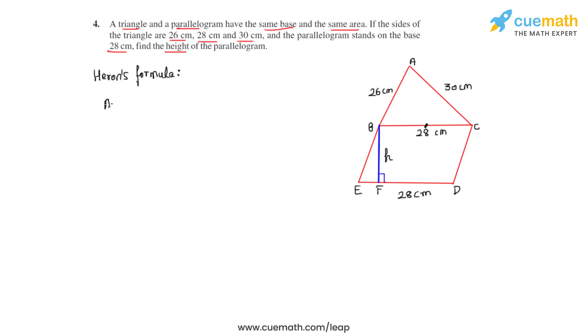So area A equals under root S times S minus A times S minus B times S minus C, where S is the semi-perimeter while ABC are the three side lengths of a given triangle. So we will first have to find the semi-perimeter for triangle ABC.